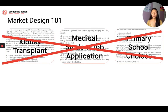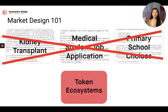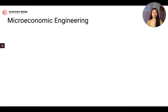But today we're not talking about those at all. We're going to understand market design in terms of token ecosystems. If you're interested in those three examples — kidney transplant, medical schools, and primary school choices — I have them in the resource list I'll share later. They're very great papers. But we're going to talk very specifically about decentralized digital ecosystems, your token ecosystems.